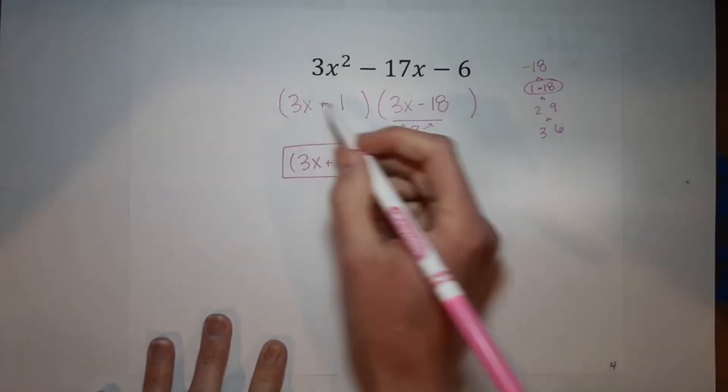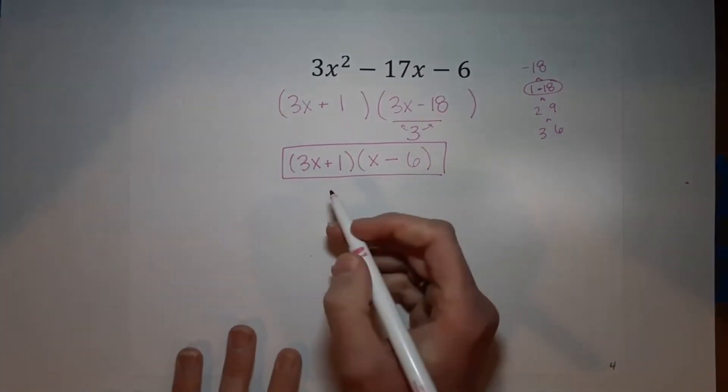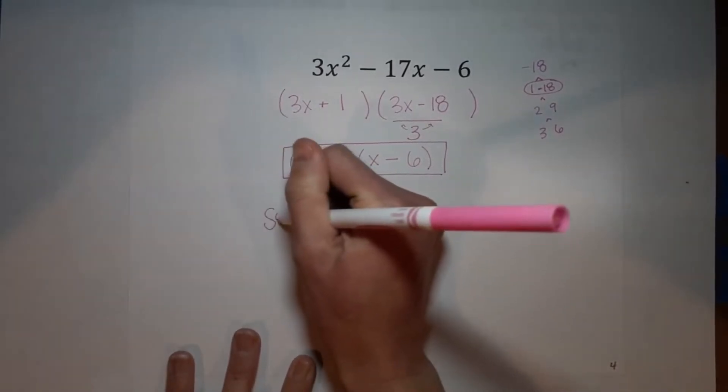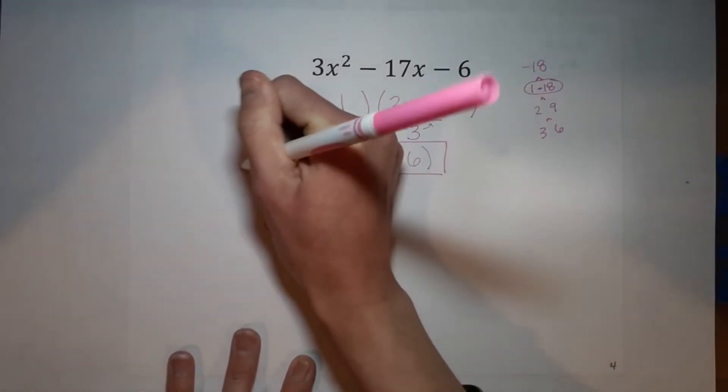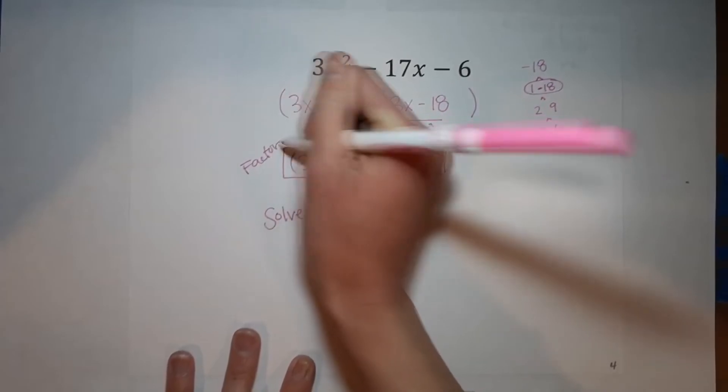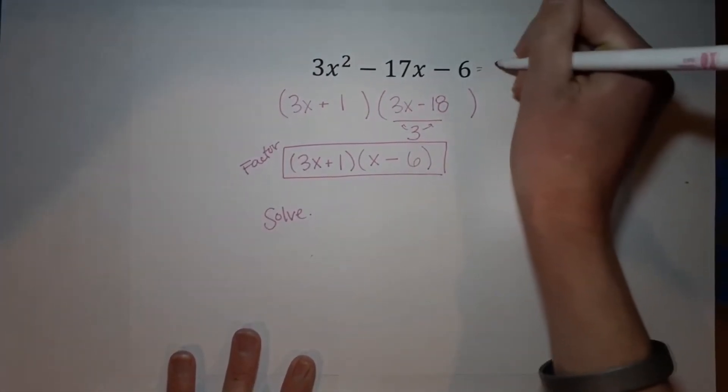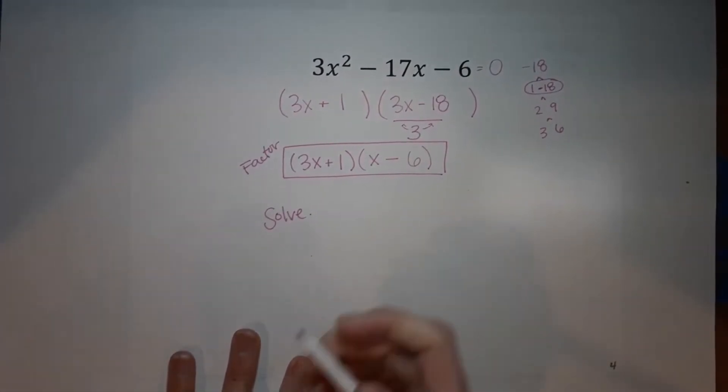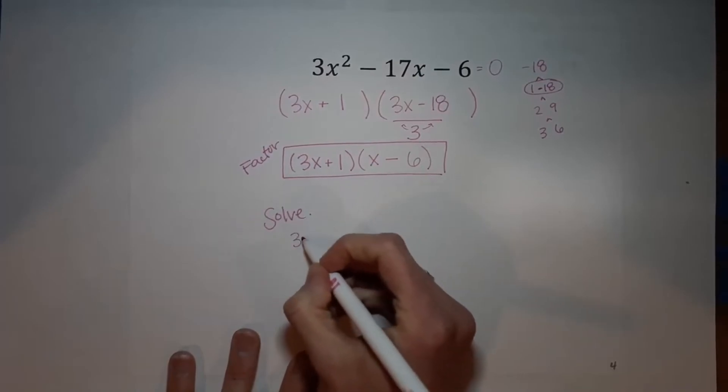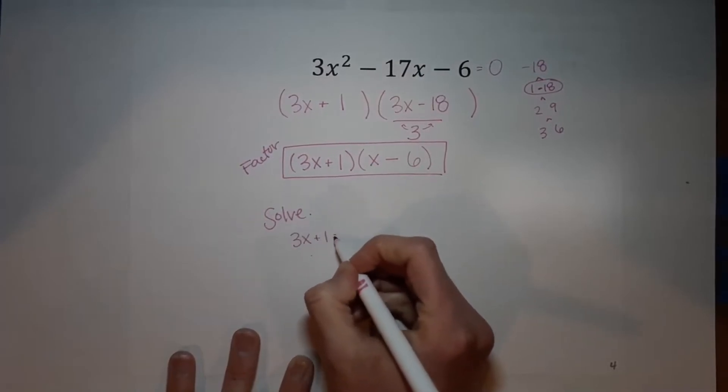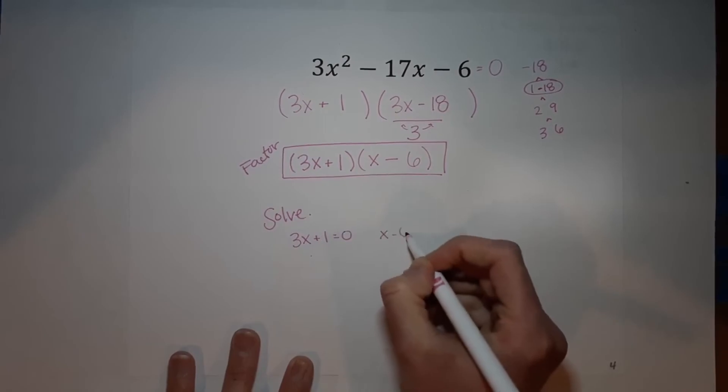If you are asked to solve, so this is if you're just asked to factor. If you are asked to solve, remember this is equal to zero. So you just set each of these equal to zero: 3x plus one equals zero, x minus six equals zero.